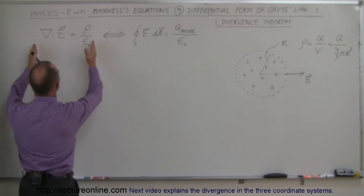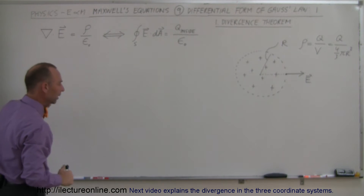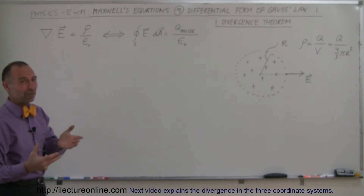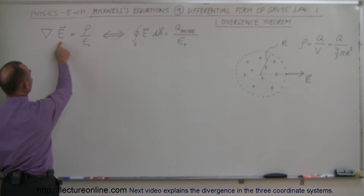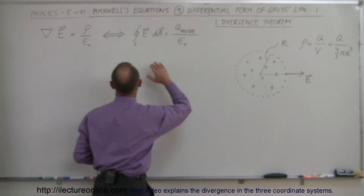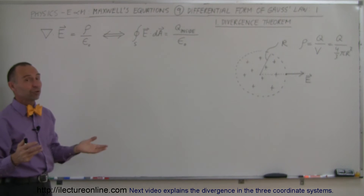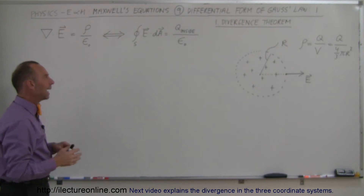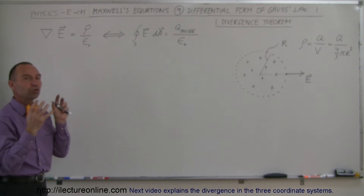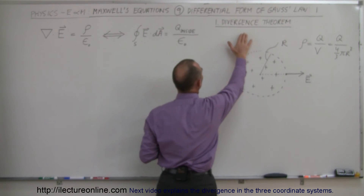So how is that same thing stated in the differential form equation? This is what we call the del operator, and when we take the dot product of the del operator with the electric field — we call this operation the divergence — that is equal to the charge density of the charge inside the surface divided by epsilon sub nought. How can those two things be the same? We're going to show that these are actually equivalent to each other by using what we call the divergence theorem.